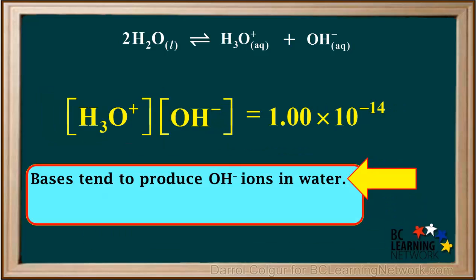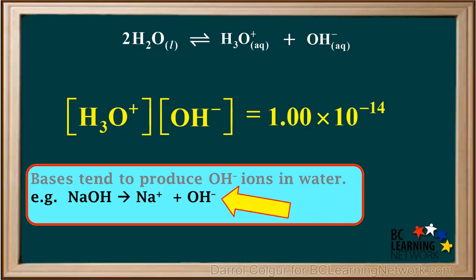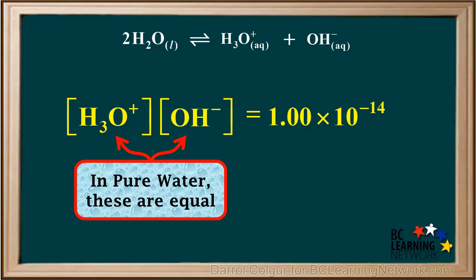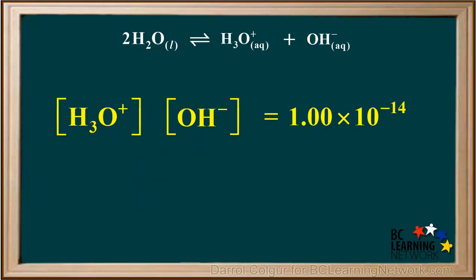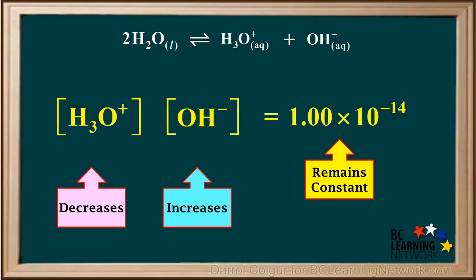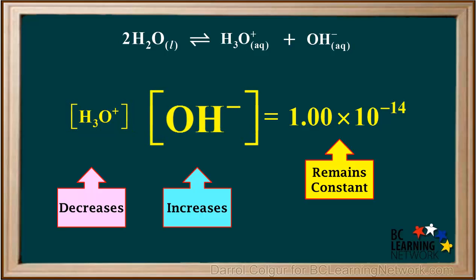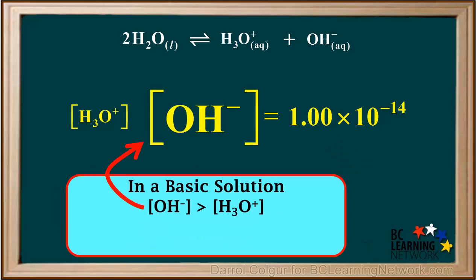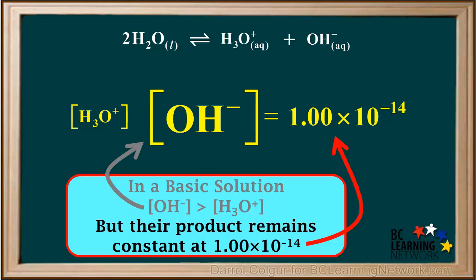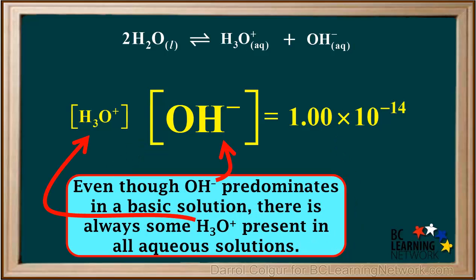Bases tend to produce OH- ions in water. For example, NaOH dissociates into sodium and hydroxide ions. Remember, in pure water, which is neutral, the hydronium ion concentration and the hydroxide ion concentration are equal. Let's add some base to a sample of water to increase the hydroxide ion concentration. A base is added and the hydroxide ion concentration increases. Notice the concentration of hydronium must decrease in order to keep their product constant. In a basic solution, the concentration of hydroxide is greater than the concentration of hydronium, but their product remains constant at 1×10⁻¹⁴. It is important to realize that even though OH- predominates in a basic solution, there is still some H3O+ present in all aqueous solutions.